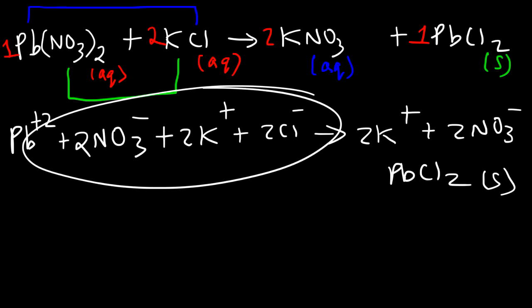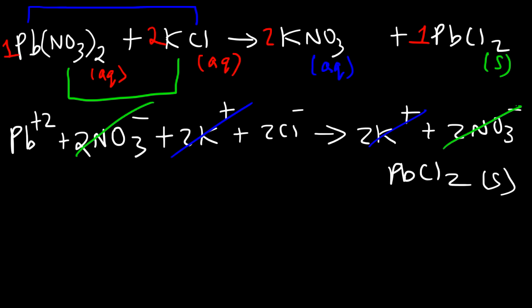All of the ions that are listed here they are in the aqueous phase. So you can write aq for all of them if you want to. Now the next step that we need to do is we need to eliminate the spectator ions. What are the spectator ions in the total ionic equation? Can you identify them? The spectator ions are those that appear exactly the same on both sides. So potassium is a spectator ion. Nitrate is a spectator ion.